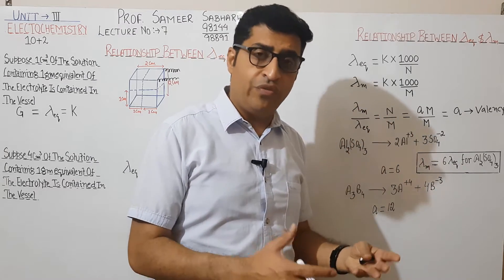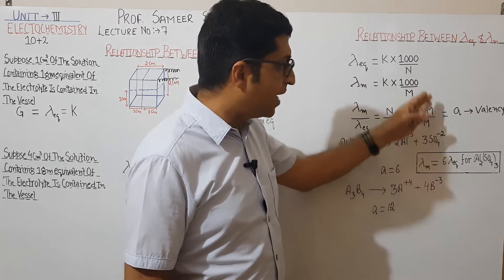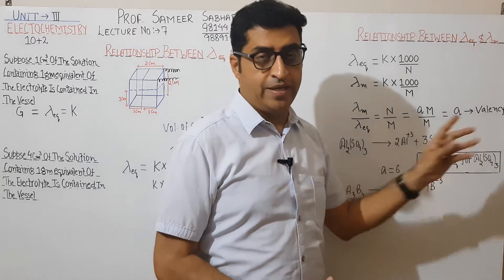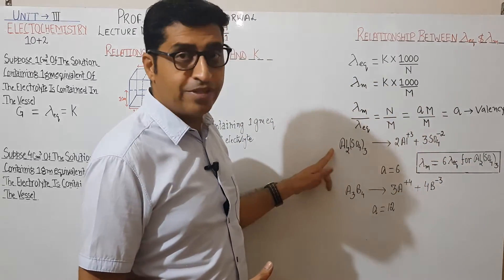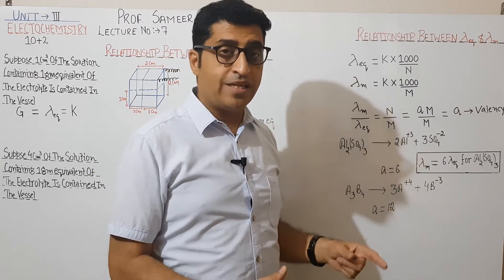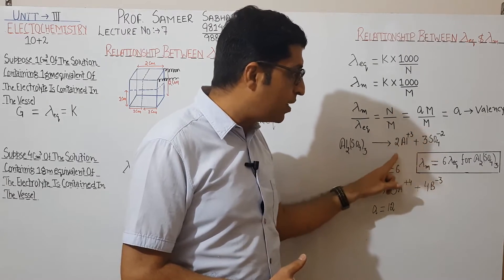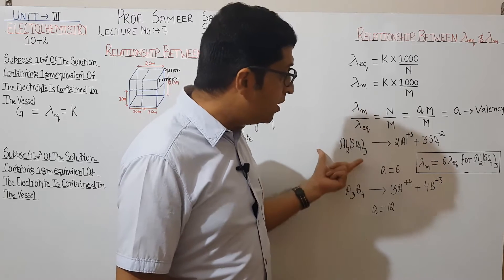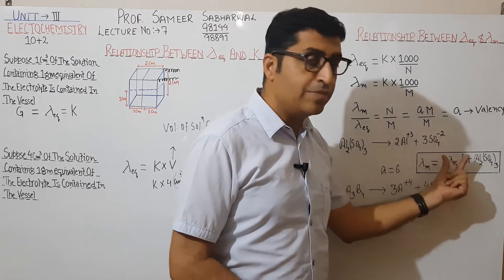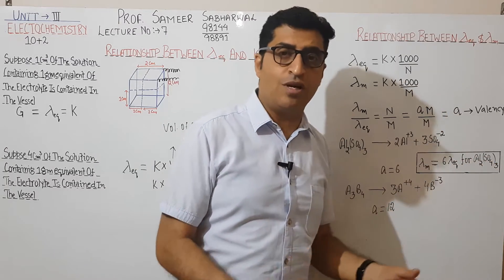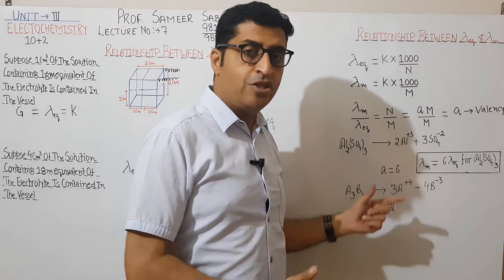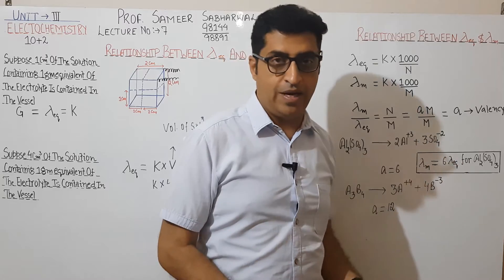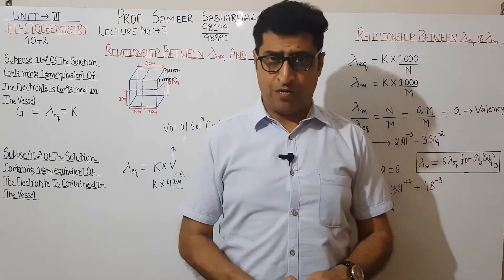Normality equals valency multiplied by molarity, so molarity cancels out and we get valency. It means lambda M equals A times lambda equivalent, where A is the valency factor. For example, aluminum sulfate dissociates as 2 Al³⁺ plus 3 SO₄²⁻. The valency factor is 2×3 equals 6, so lambda M equals 6 times lambda equivalent. For a general formula A₃B₄ dissociating as 3 A⁴⁺ plus 4 B³⁻, A equals 12, so lambda M equals 12 times lambda equivalent.